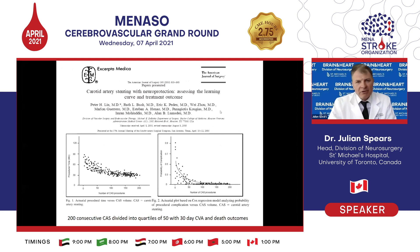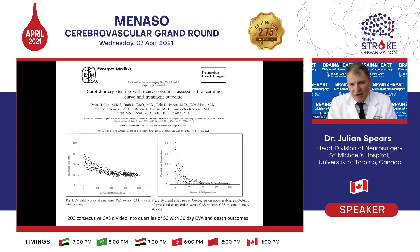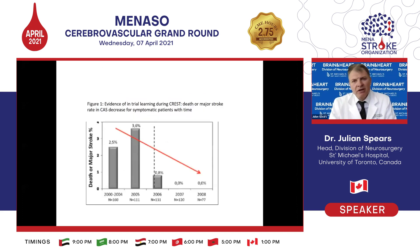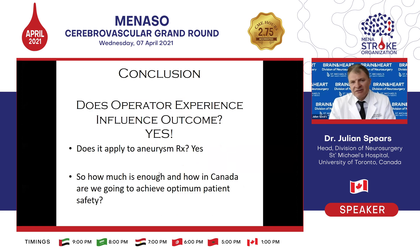An Austrian study and a study from Houston both show the curve plateauing around the 75-procedure mark — meaning you need to have done approximately 75 carotid angioplasty and stents before your complication curve flattens. That is a substantial volume in this day and age, particularly when medical therapy is so good. The CREST data confirms this: complication rates of death or major stroke were substantially higher in the 2000–2005 epoch than in 2006–2008.